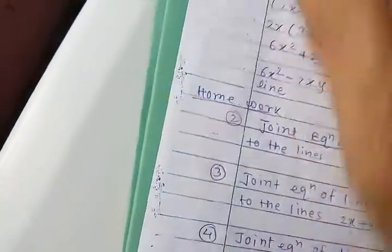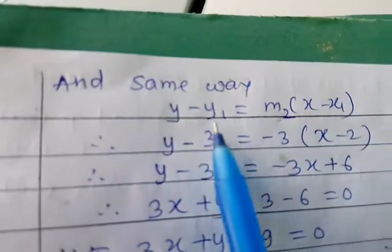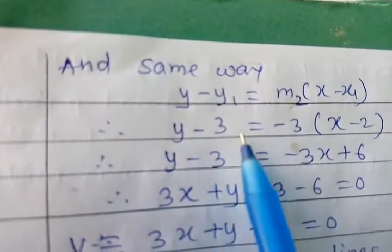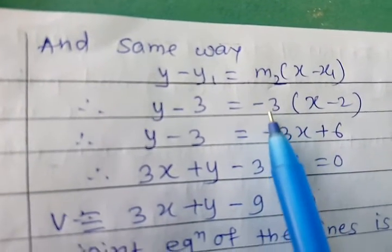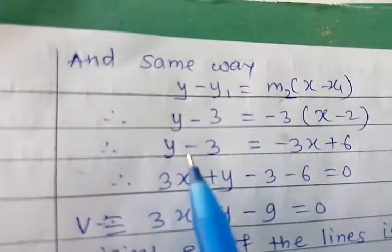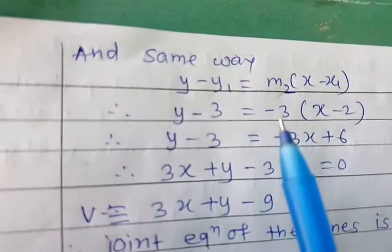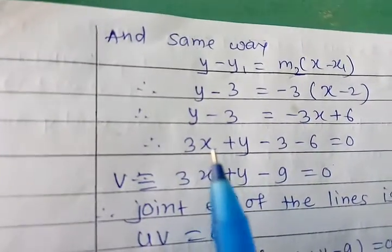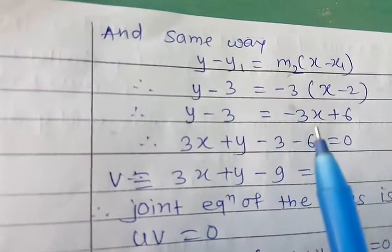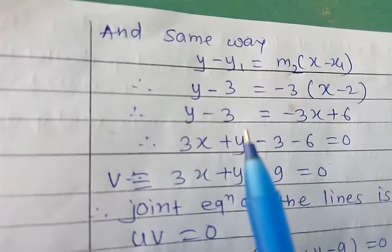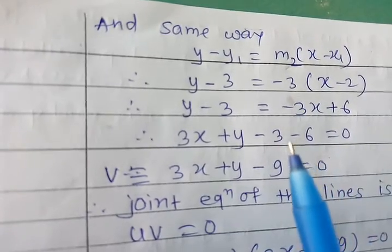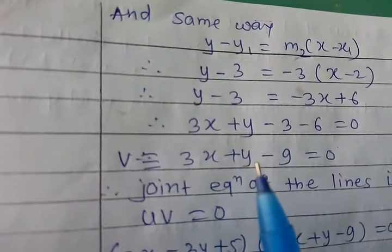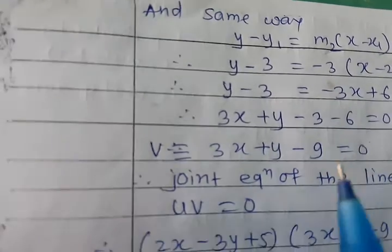For the second line through (2, 3) with slope m2 = −3: y − 3 = −3(x − 2), giving y − 3 = −3x + 6. Rearranging: 3x + y − 9 = 0. This is the second equation v.